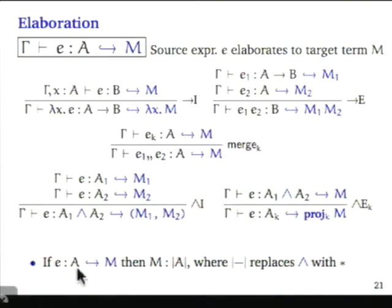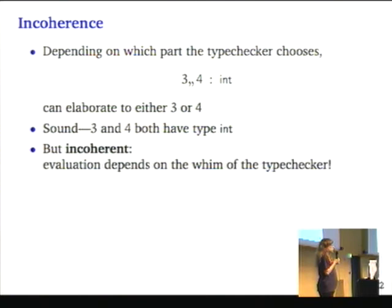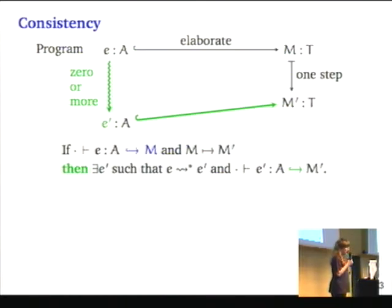Depending on which part of the merge the type checker chooses, though, you still get some strange behavior. If you write 3 merge 4 at type int, then this could elaborate to either 3 or 4 - they both have type int, it's sound. But this is quite undesirable because now evaluation is going to depend on whatever the type checker happened to do. Reynolds noticed this quite a long time ago with intersection type systems and called this problem incoherence. I'll talk more about that later.